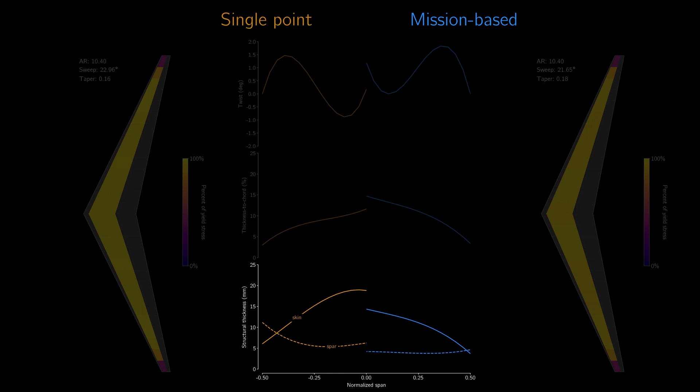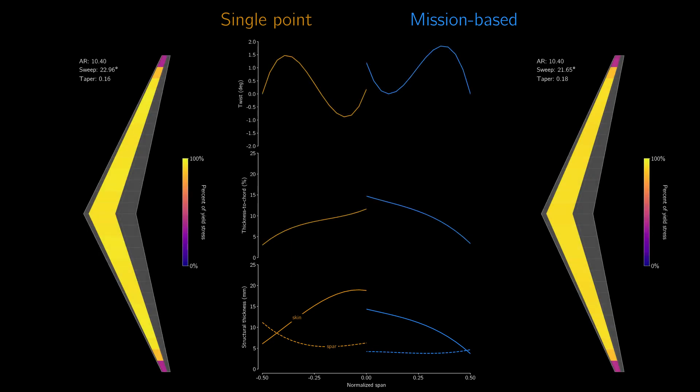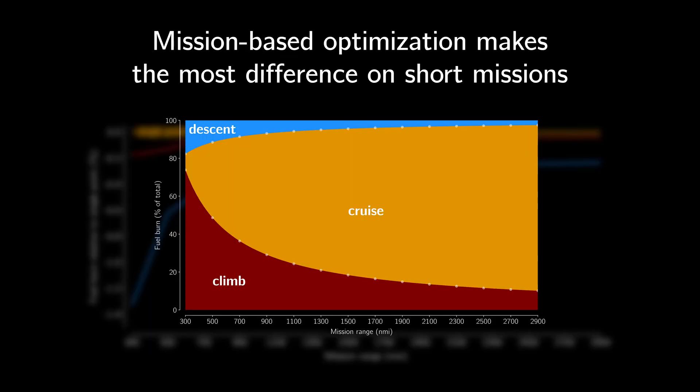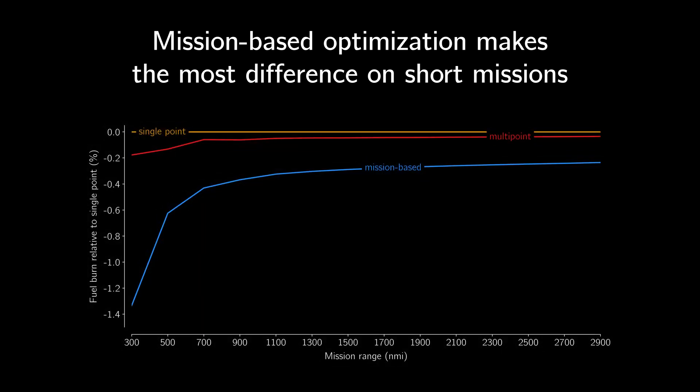What we really want to know is how the benefit of this new mission-based optimization changes as the cruise burn becomes more and more dominant. We do that by running optimizations on mission ranges from 300 to 2900 nautical miles. On the 300 mile mission, the fuel burn is almost entirely in climb. On the 2900 nautical mile mission, most of the fuel is burned in cruise. We see that mission-based optimization reduces fuel burn by over one percent for the shorter missions and about half a percent on average compared to traditional single point.